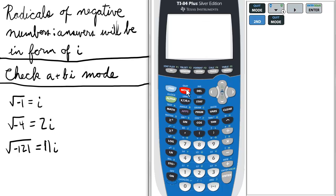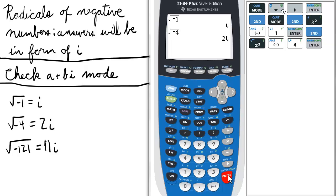Now we can quit to the home screen. If we take the square root of negative 1, it will give us the answer i. If we take the square root of negative 4, it gives us the answer 2i.